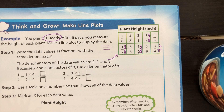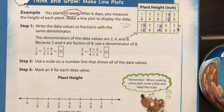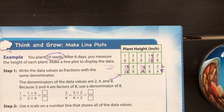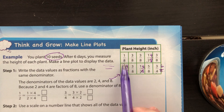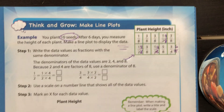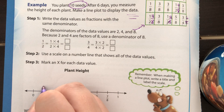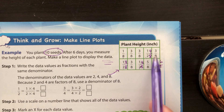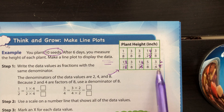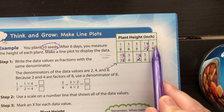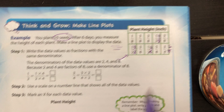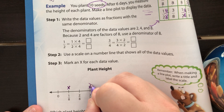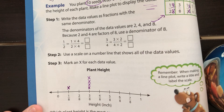So I can start putting an X on the number line. Here is my number line — it goes from zero to one, and here are all my fractions represented. One eighth is right here. Let's see if there's another one eighth in my chart — nope, there's only one. So I'm going to go to where it says one eighth and draw one X. Let's see if there's any two eighths — no two eighths. The next one represented would be three eighths. There's one, two, three, four of those three-eighth plants. So I draw four X's for that.